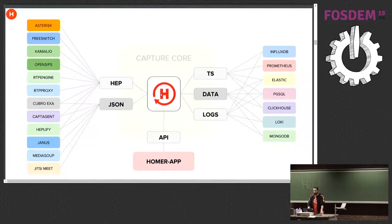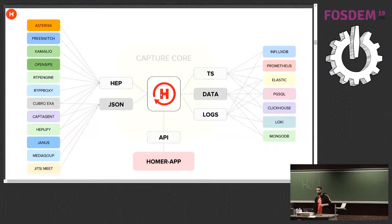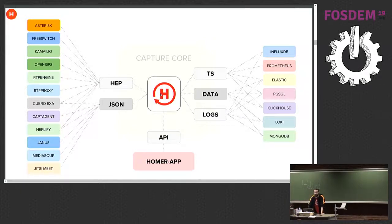This is more or less how it looks today. On the left, starting from the classic, we have all of the VoIP platforms that we support natively. Of course, this doesn't include anything that you can port mirror or just span to the platform — it doesn't matter. Asterisk, FreeSWITCH, OpenSIPS, RTPengine, NTP proxy — they all come with native HEP support. You flip a switch and they're sending data to our platform.